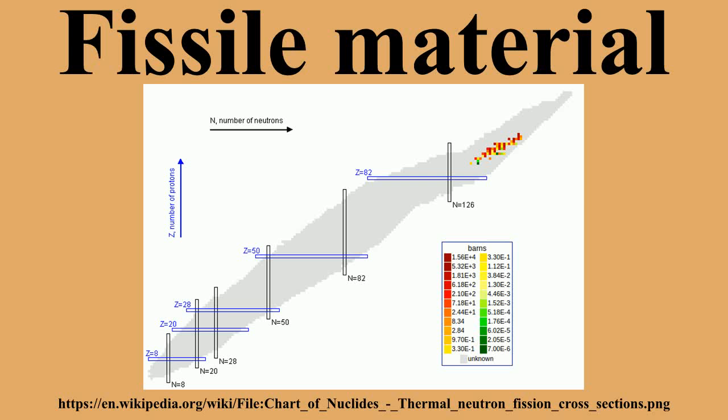Fissile is distinct from fissionable. A nuclide capable of undergoing fission after capturing a high-energy neutron is referred to as fissionable. Although the terms were formerly synonymous, fissionable materials include also those that can be fissioned only with high-energy neutrons.